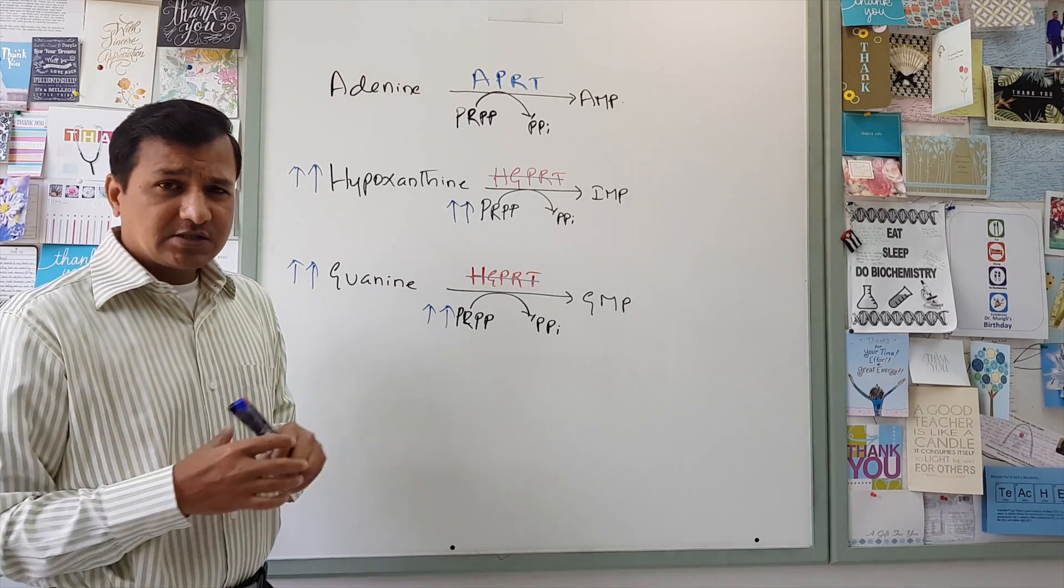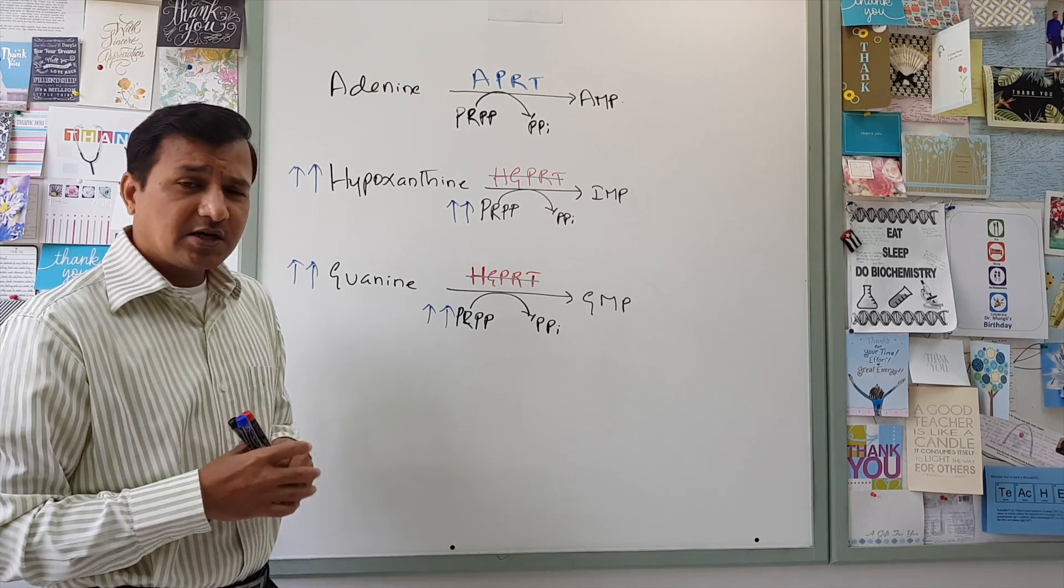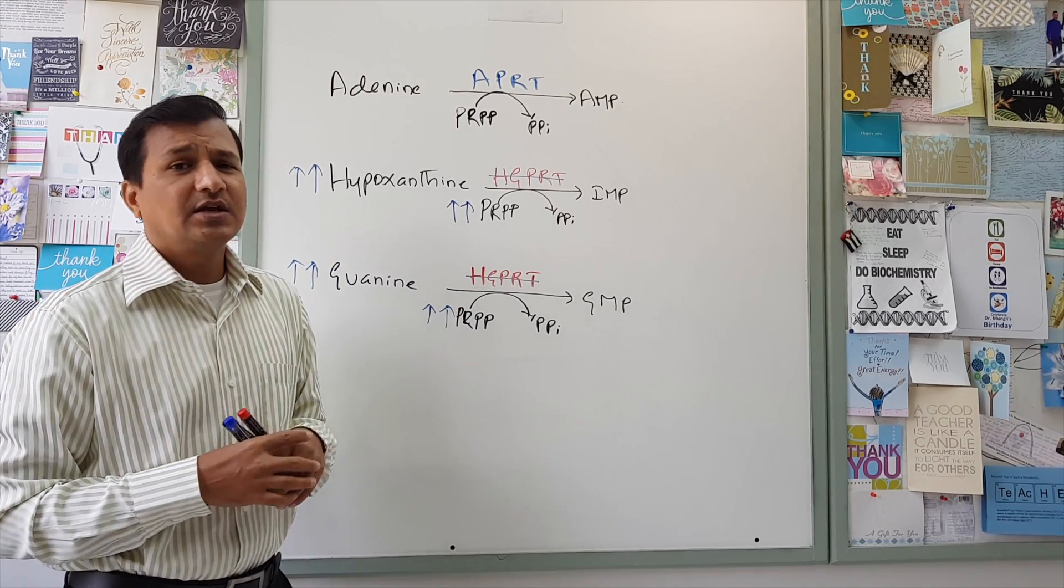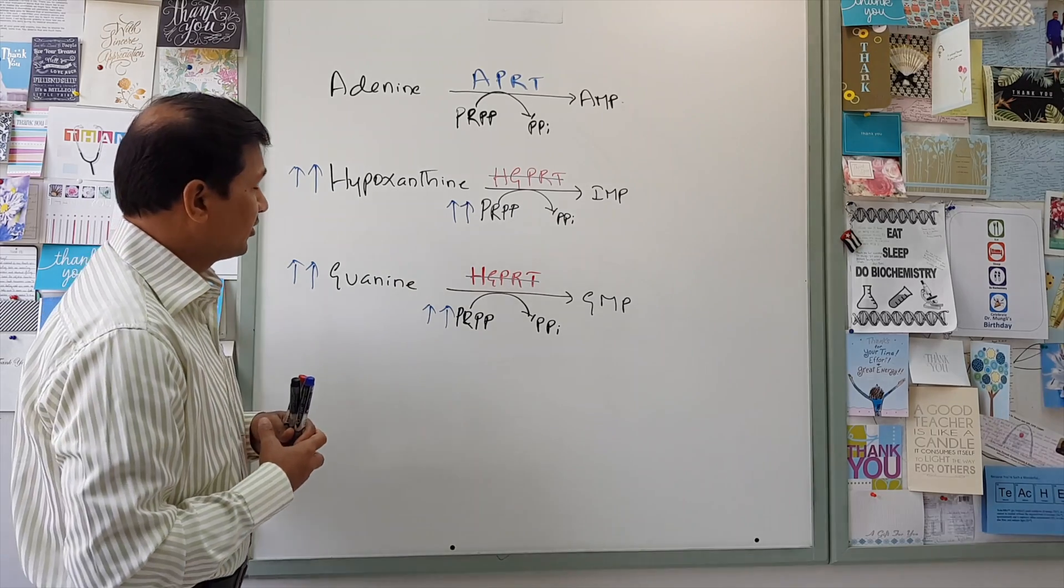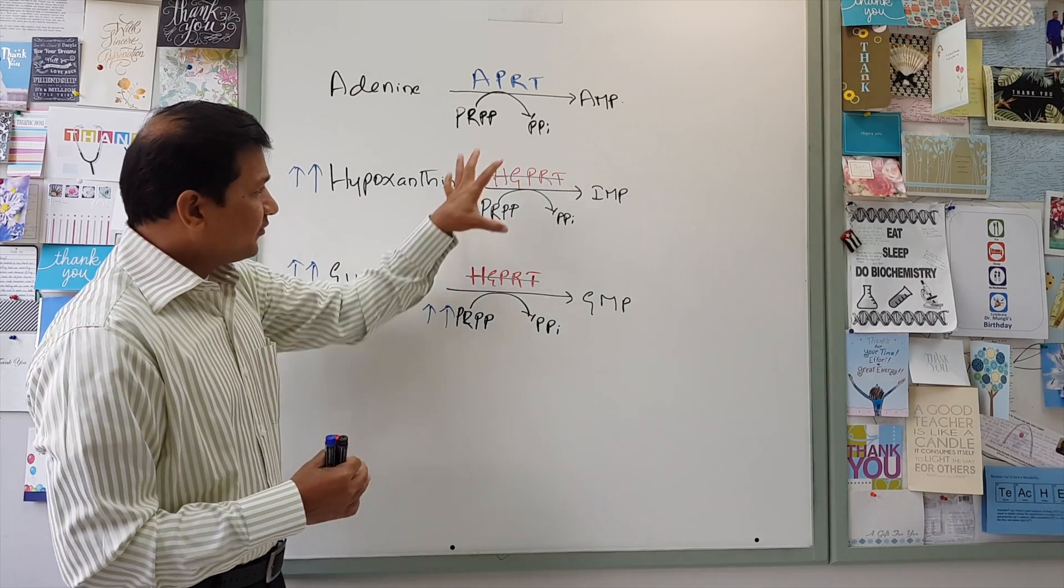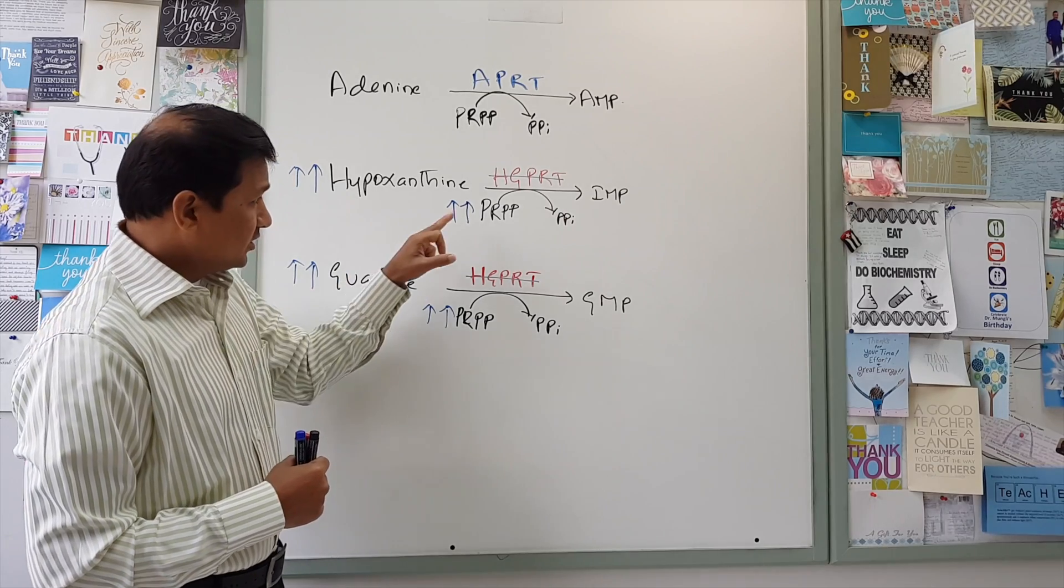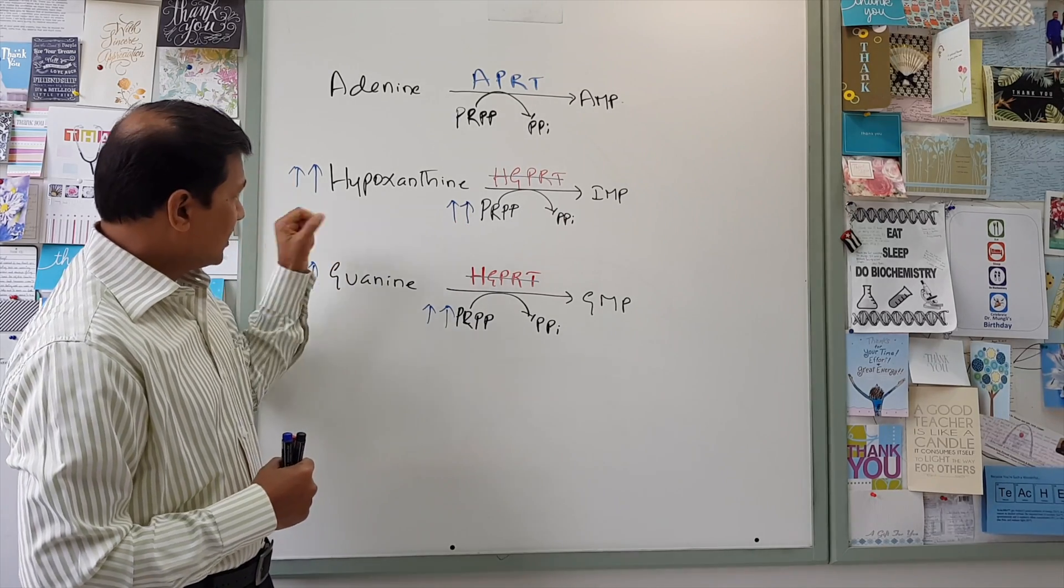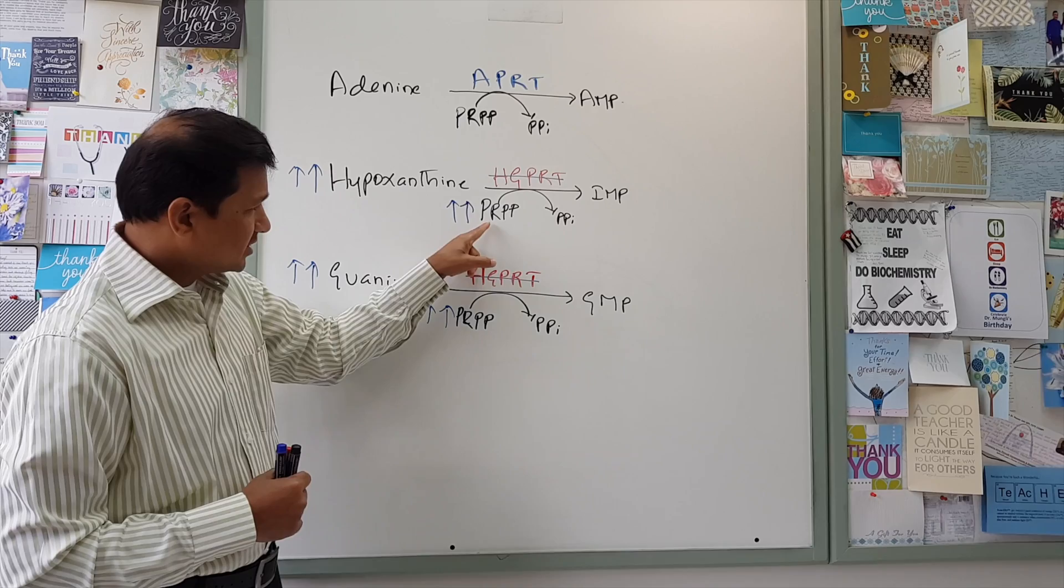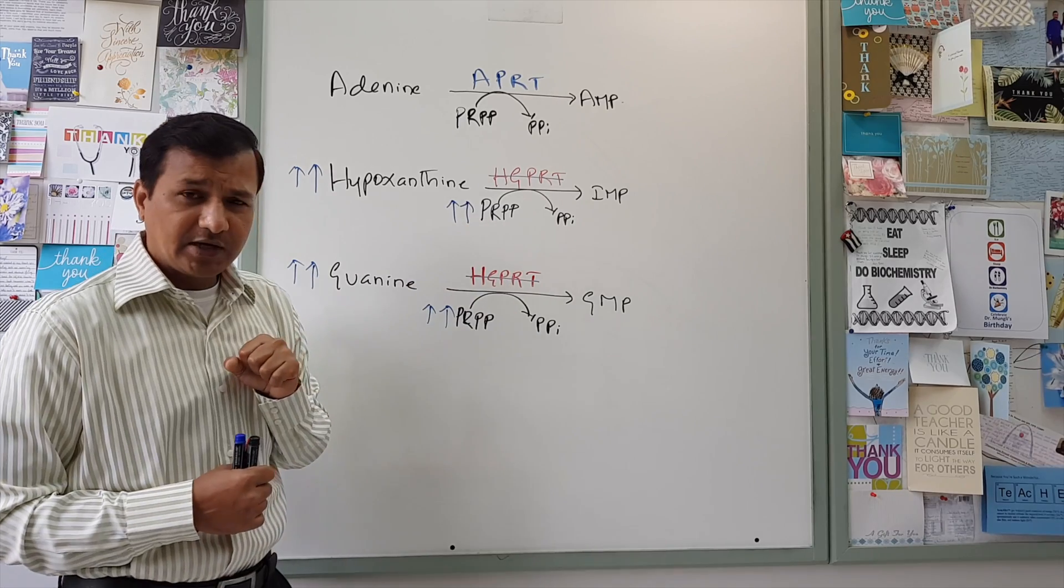Now, let us see what all the signs and symptoms seen in this particular disease and why these signs are seen to a certain extent. I can explain you on that. Now, what happens if there is a complete absence of HGPRT? So there is elevation of PRPP, there is elevation of hypoxanthine here. So let us first see what is the consequence of elevated PRPP.